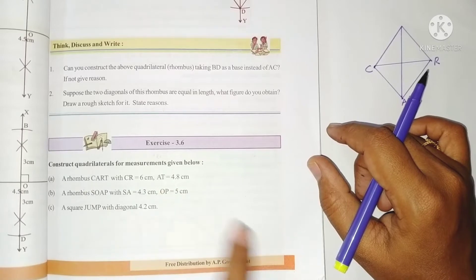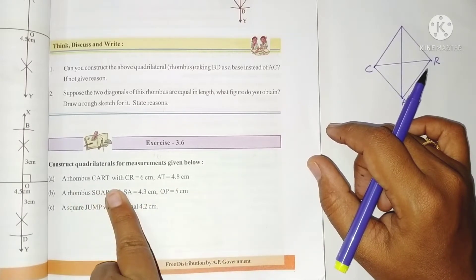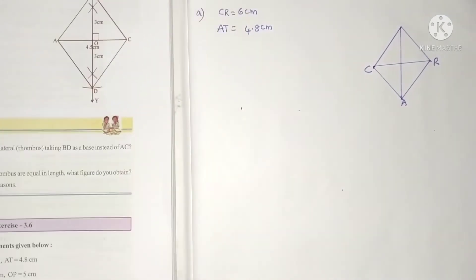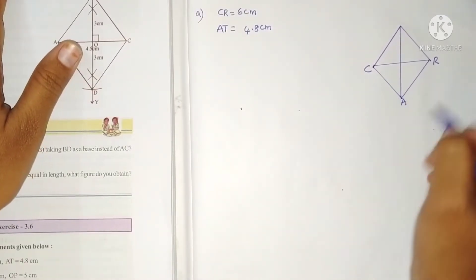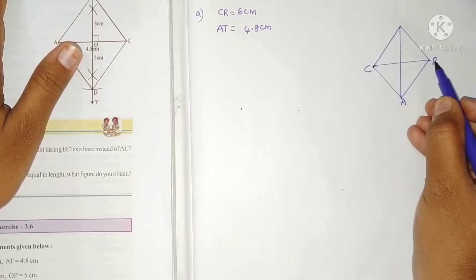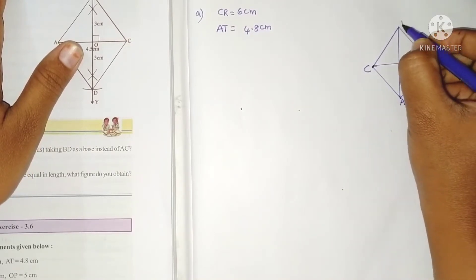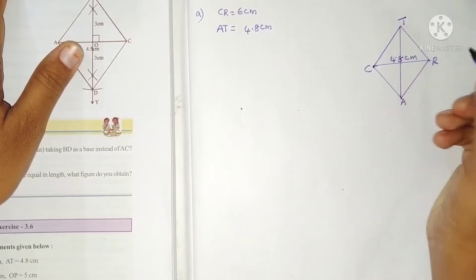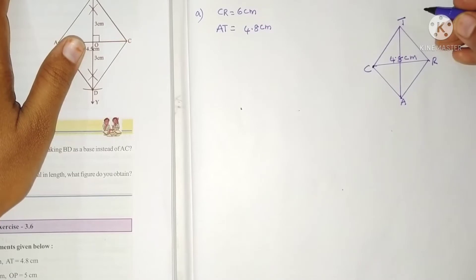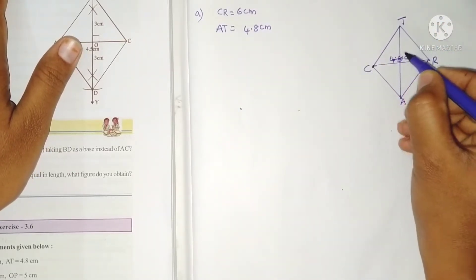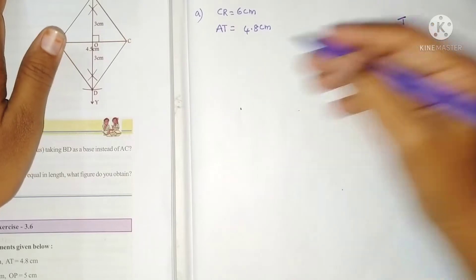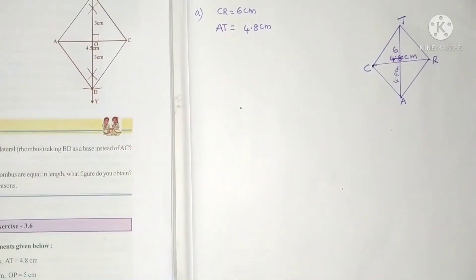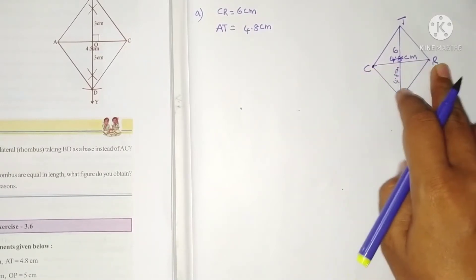Construct a rhombus CART with CR and AT. Note down the given measurements and draw the rough diagram. CR is one diagonal and AT is another diagonal. CR is 6 centimeters and AT is 4.8 centimeters.